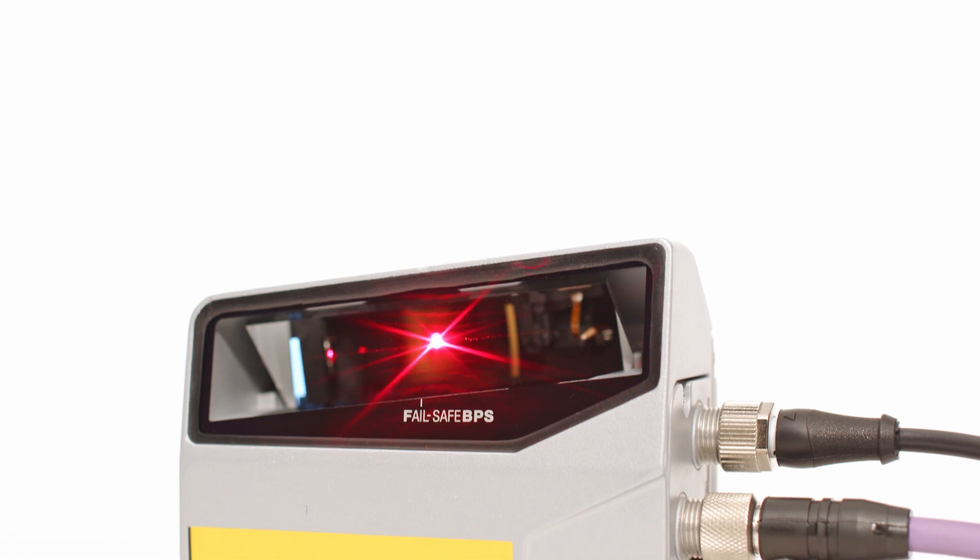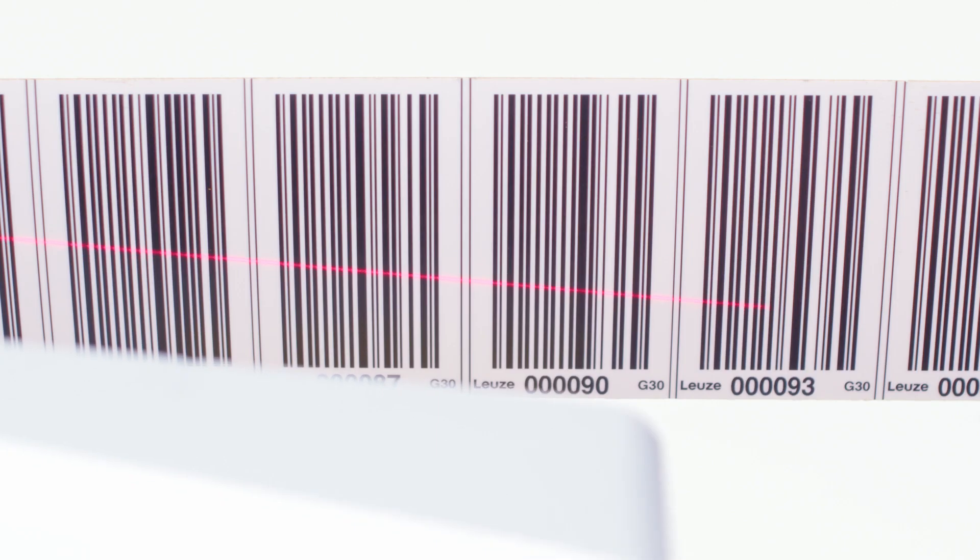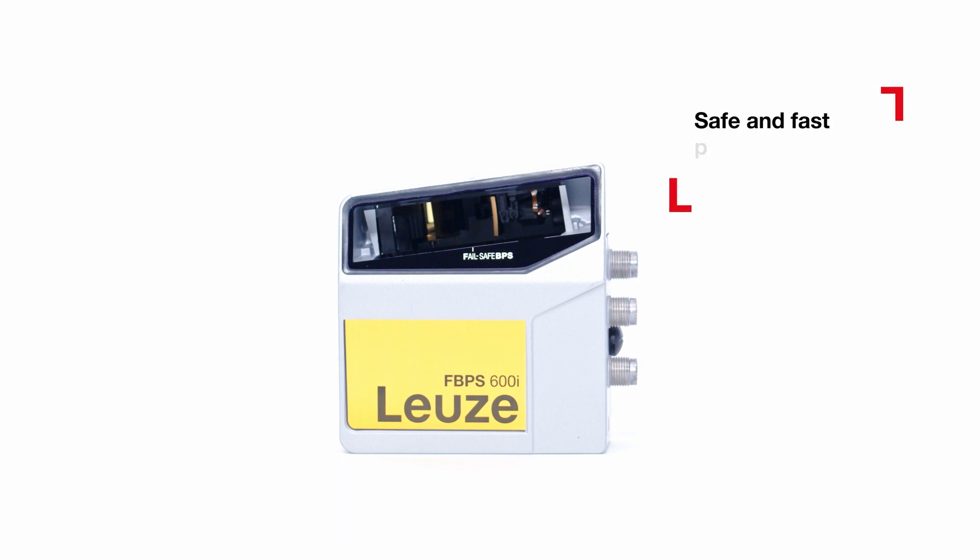FBPS 600i, the world's first safety barcode positioning system for safe and fast position detection with one device, certified with performance level E.